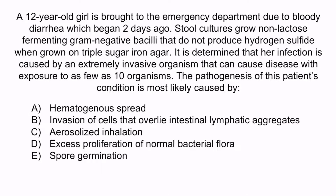A 12-year-old girl is brought to the emergency department due to bloody diarrhea which began two days ago. Stool cultures grow non-lactose fermenting gram-negative bacilli that do not produce hydrogen sulfide on triple sugar iron agar. It is determined that her infection is caused by an extremely invasive organism that can cause disease with exposure to as few as 10 organisms. The pathogenesis of this patient's condition is most likely caused by: A. Hematogenous spread. B. Invasion of cells that overlie intestinal lymphatic aggregates. C. Aerosolized inhalation. D. Excess proliferation of normal bacterial flora. Or E. Spore germination.